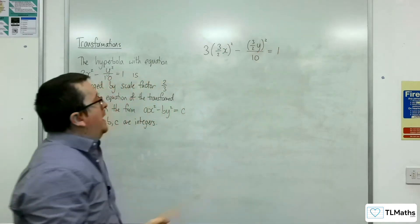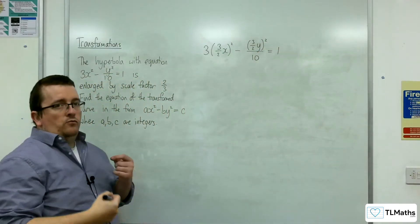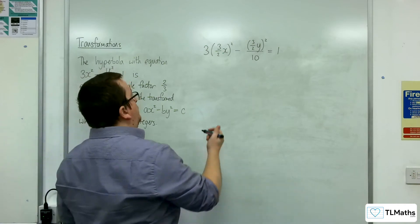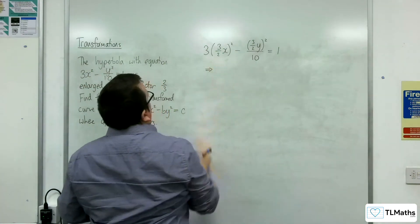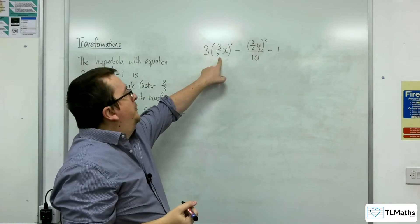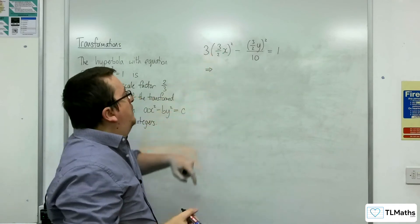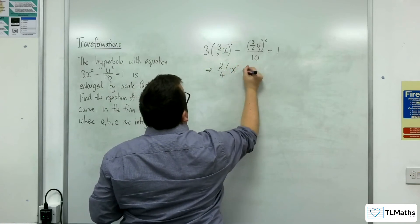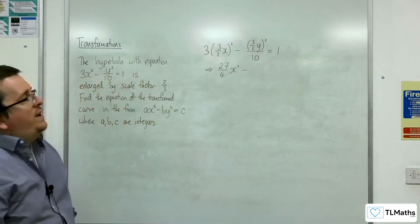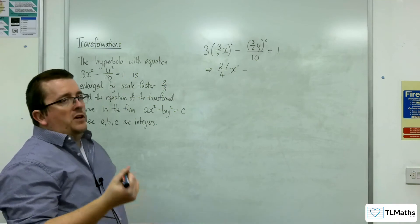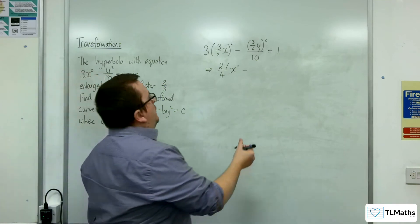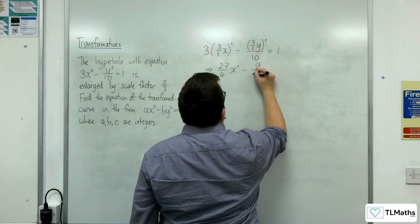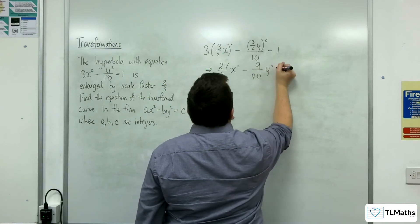Okay so this is the equation we have and I now need to rearrange this to get into the correct form. So 3 halves squared is 9 quarters times by 3 is 27 quarters. So 27 quarters x squared. Then we've got 3 halves squared again so 9 quarters divided by 10 which is 9 over 40, y squared equals 1.